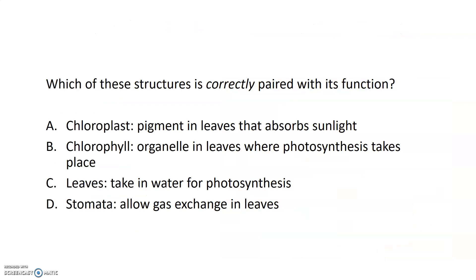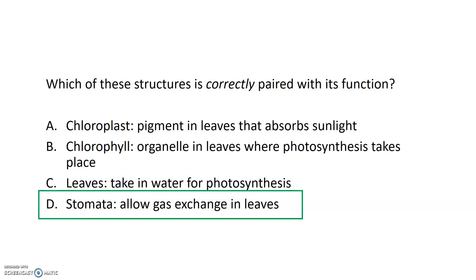Take a second — read through these different structures and functions and determine which one is correctly paired: the right structure with the right function. Stomata is the only one correctly paired. Leaves don't take in water for photosynthesis — that would be the roots. The chloroplast and chlorophyll functions are switched: the chloroplast is the organelle, chlorophyll is the pigment. Stomata is the hole in the bottom of the leaves where gas exchange takes place.